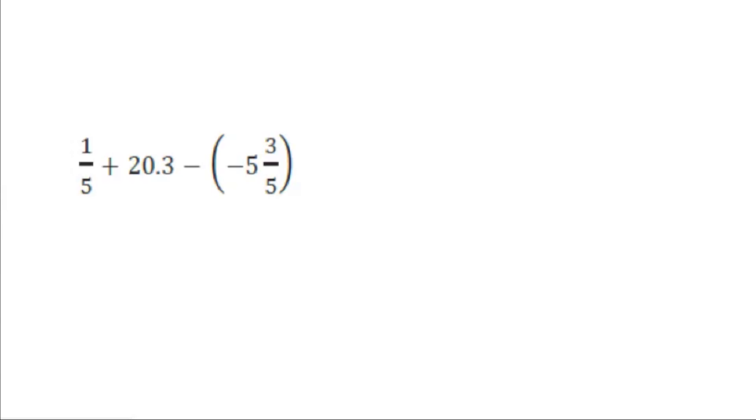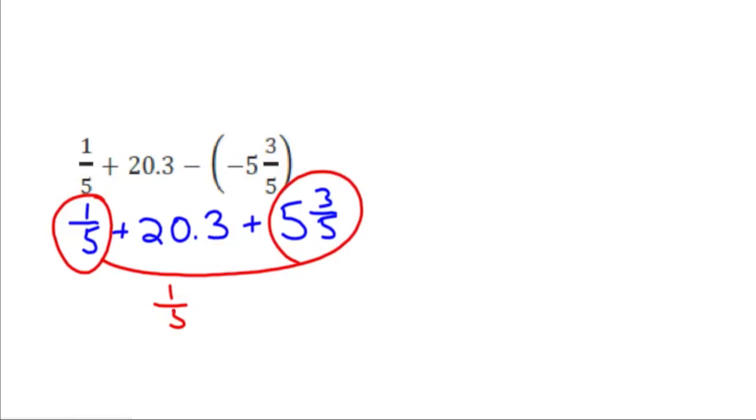Let's use our properties of numbers. Instead of subtracting, we can think of this as 1 fifth plus 20.3. Instead of subtracting the negative, we can think of adding this 5 and 3 fifths. Now we can go in any order, so let's take the two that are fractions and combine those together. So let's add the 1 fifth and the 5 and 3 fifths. We're going to think of it as 1 fifth plus 5 and 3 fifths, and then when we're done, we'll add on the 20.3.